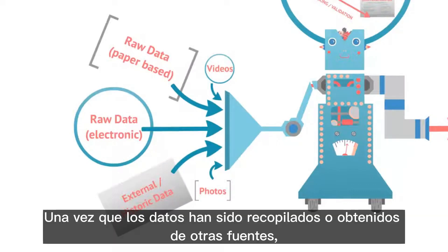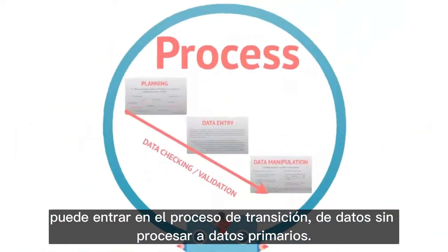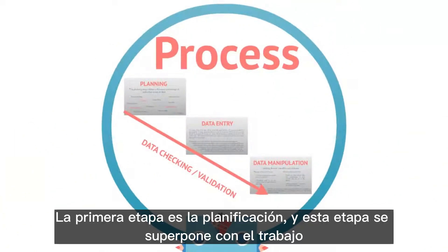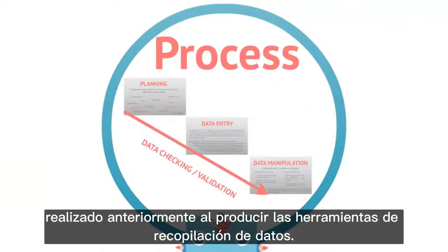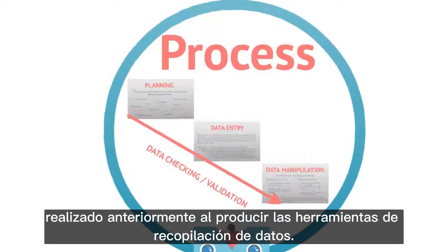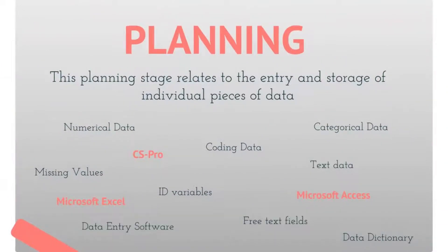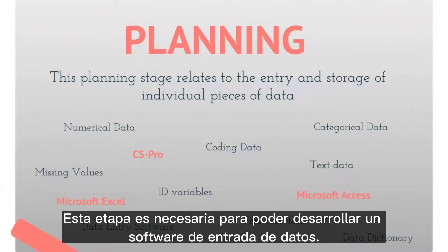Once the data has been collected or gathered from other sources, it can enter the transition process from raw to primary data. The first stage is planning, and this stage overlaps with work previously conducted when producing data collection tools. The planning stage involves thinking about how each piece of data is going to be handled and stored. This stage is required to be able to develop data entry software.